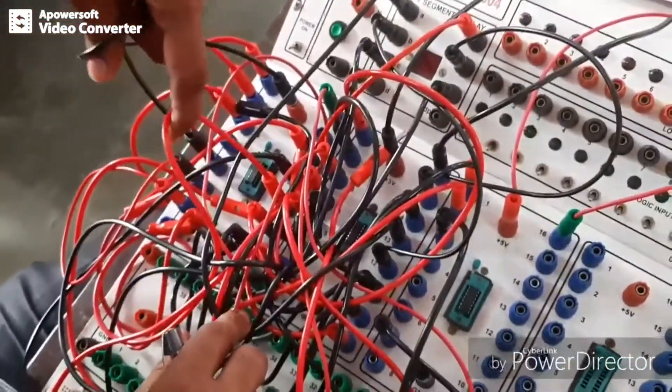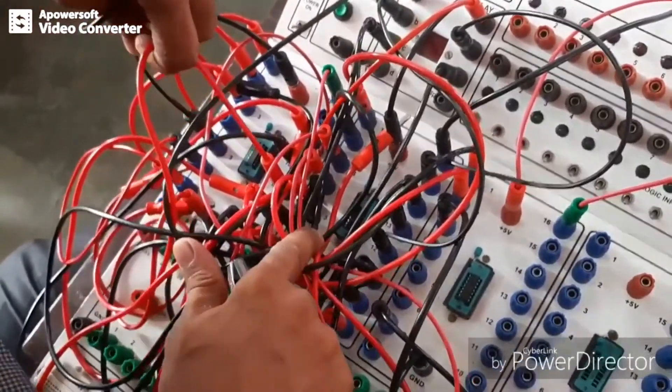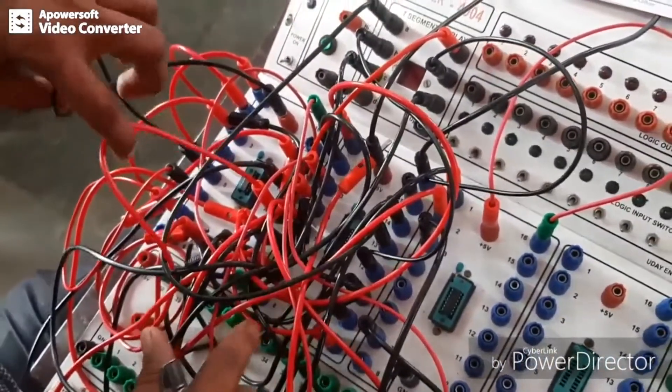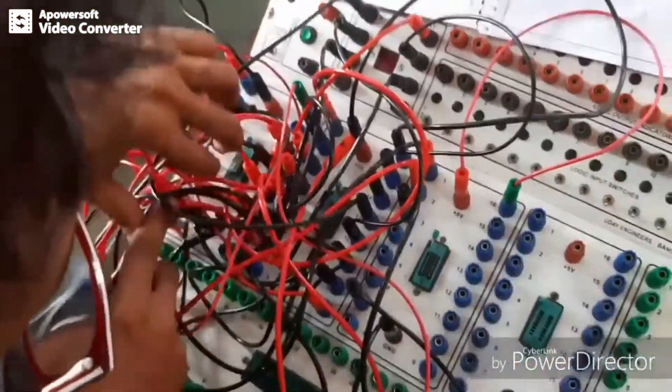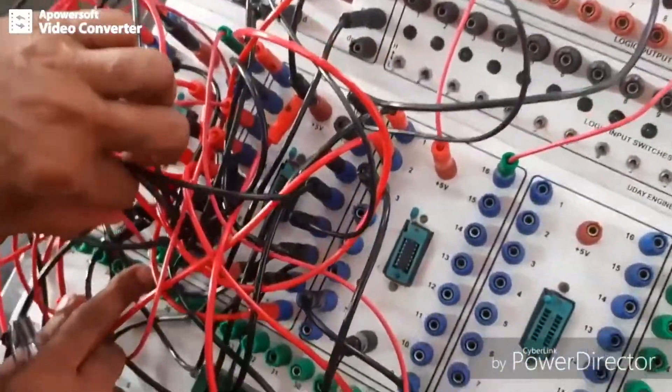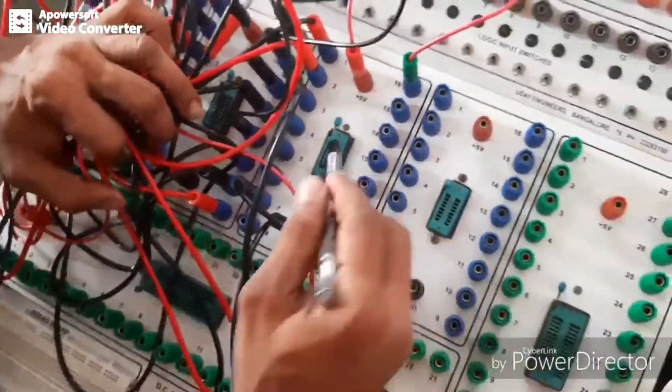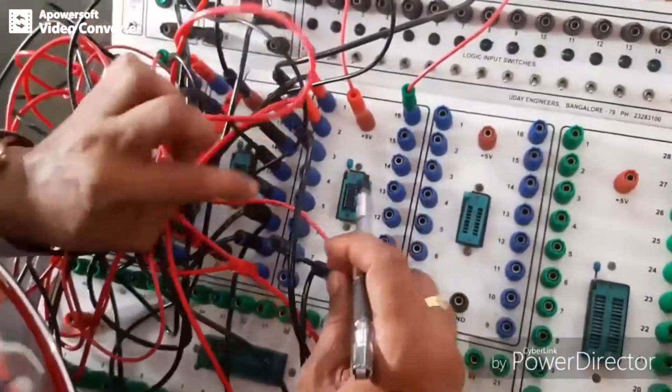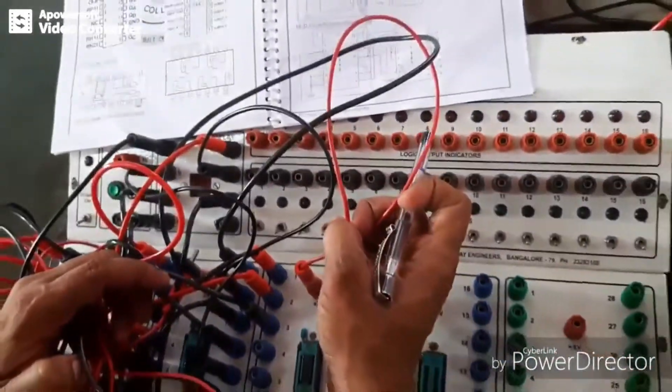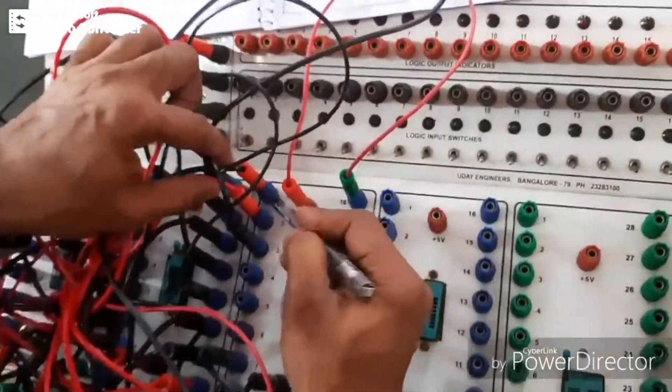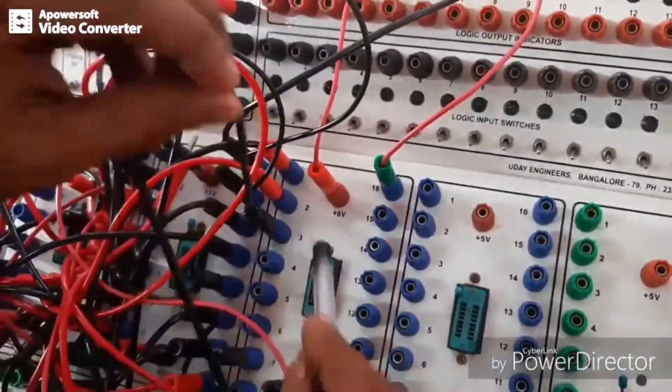So first you have to make the connection for VCC and ground. Like this, 7447 VCC is pin number 16 and ground is pin number 8. Then we have 7408 here: pin 7 is ground and pin 14 is VCC. Pin 14 is VCC, and pins 1 and 2 are the input and pin 3 is the output here.